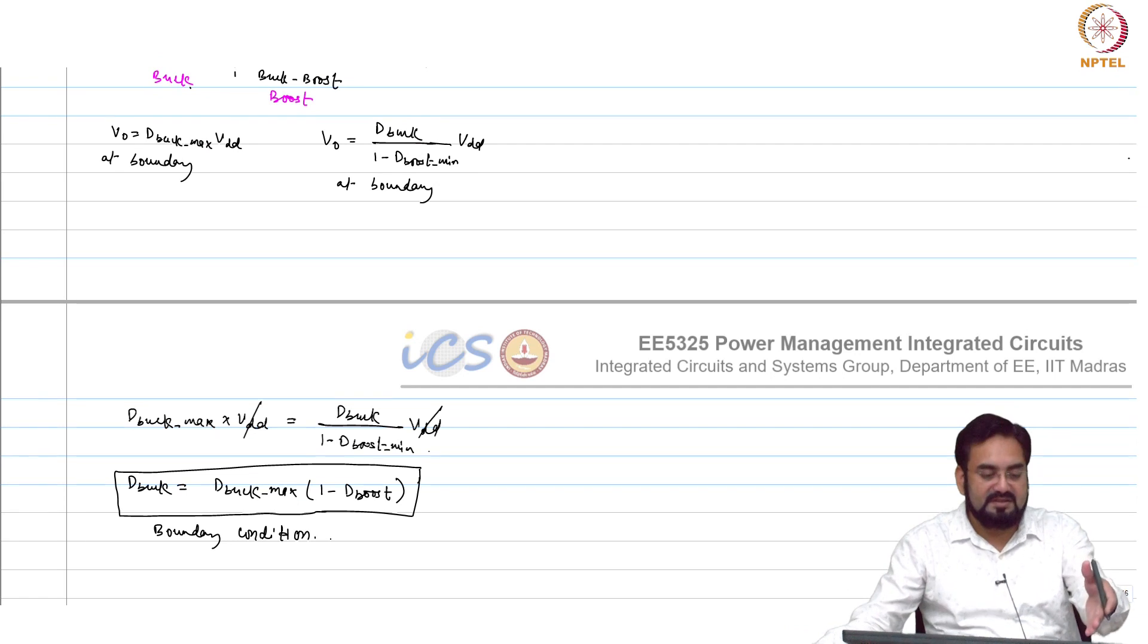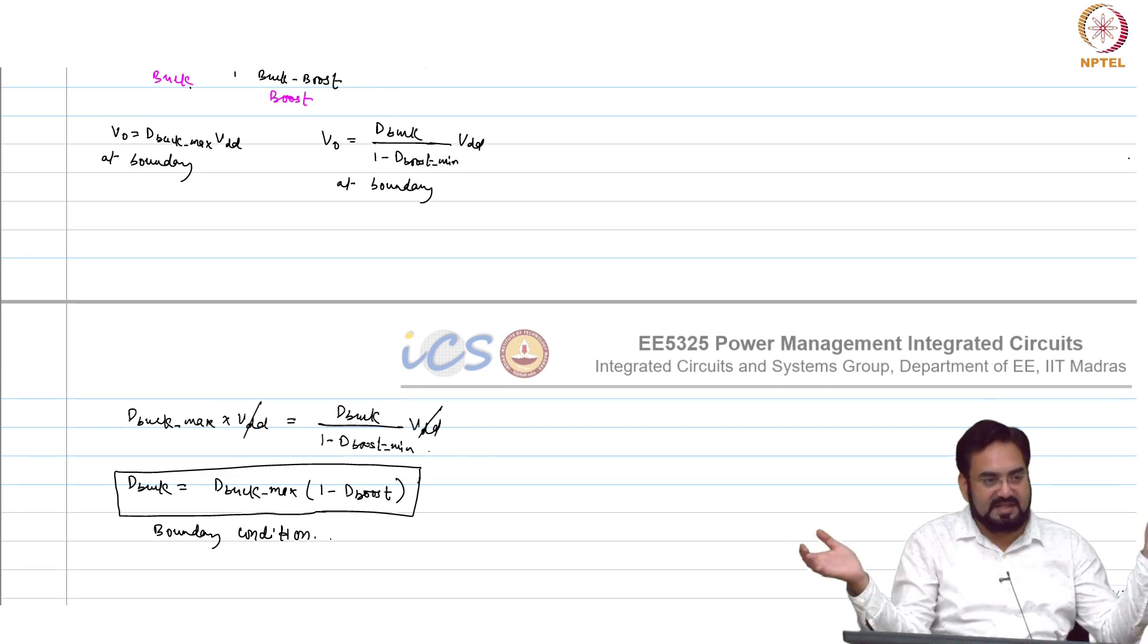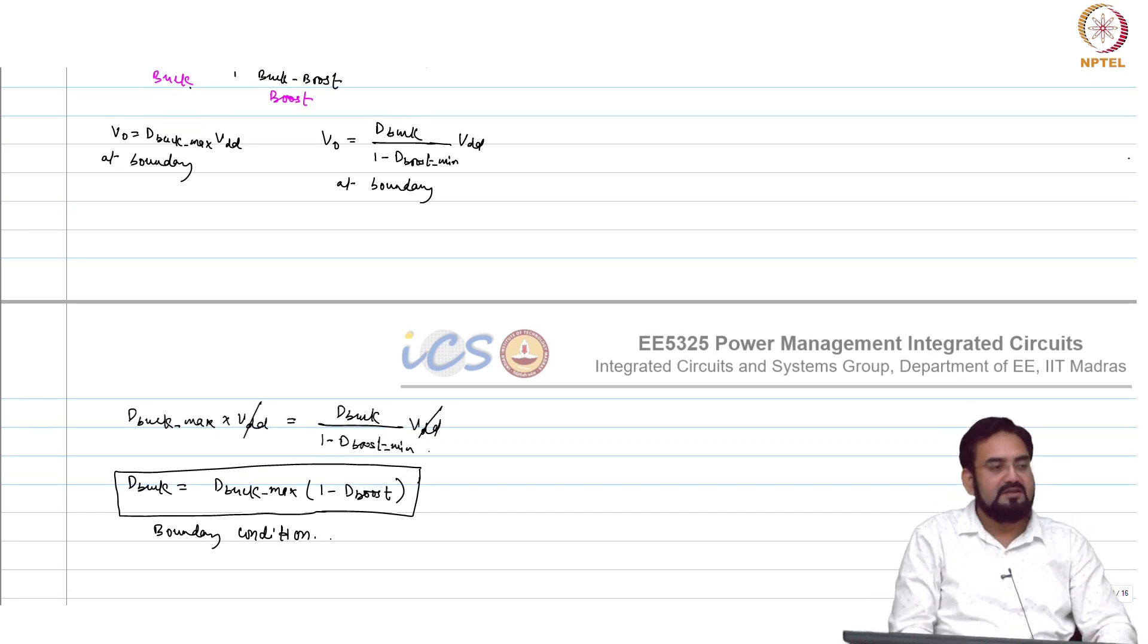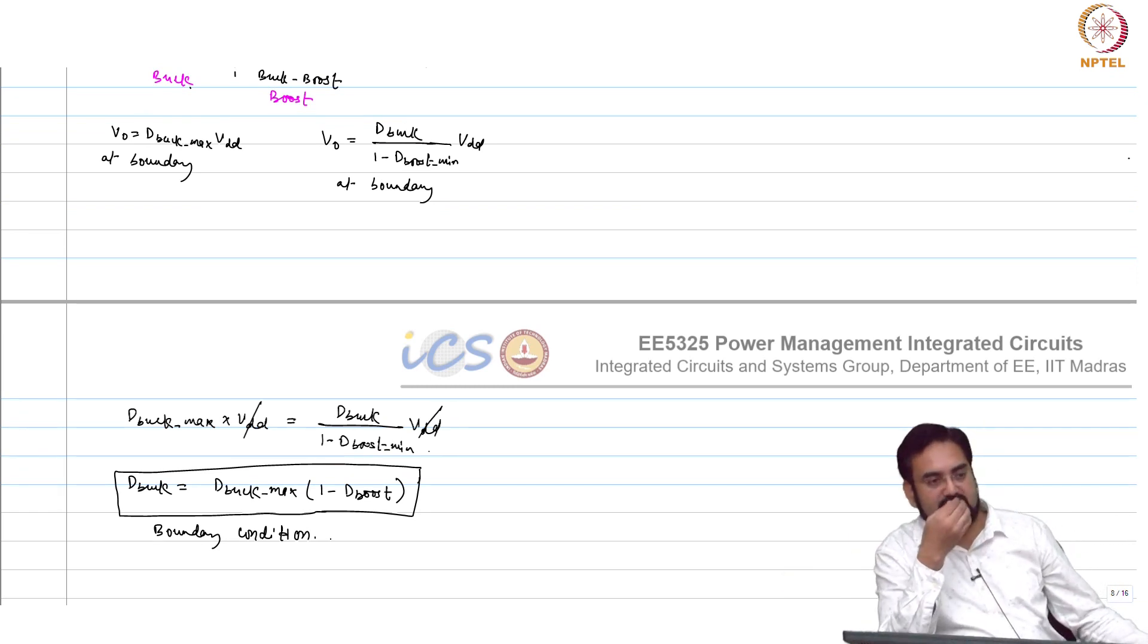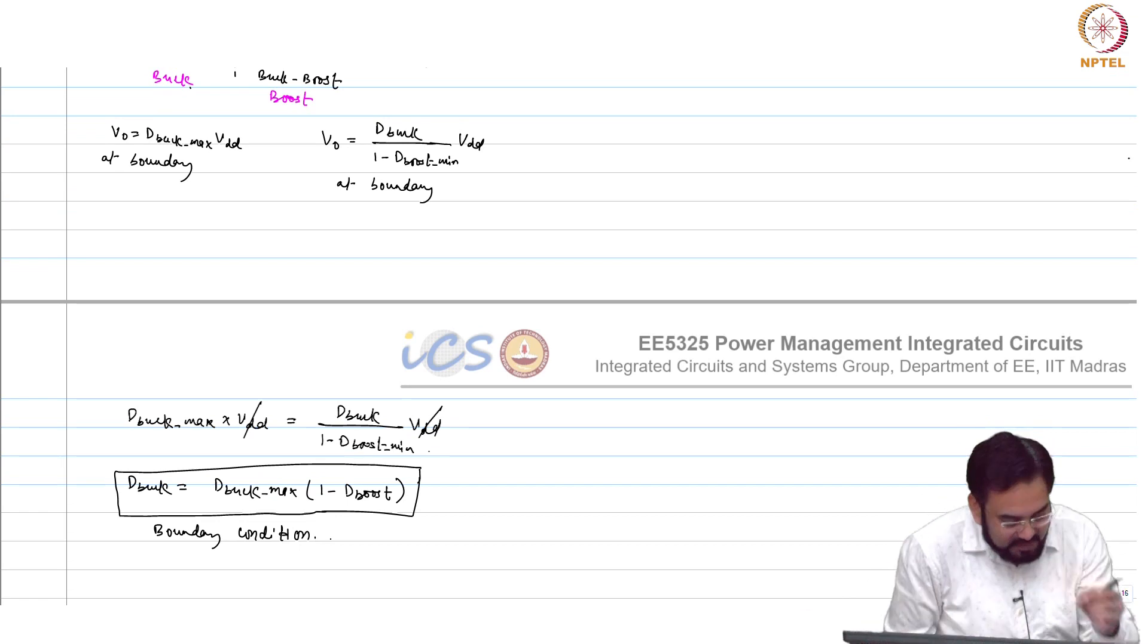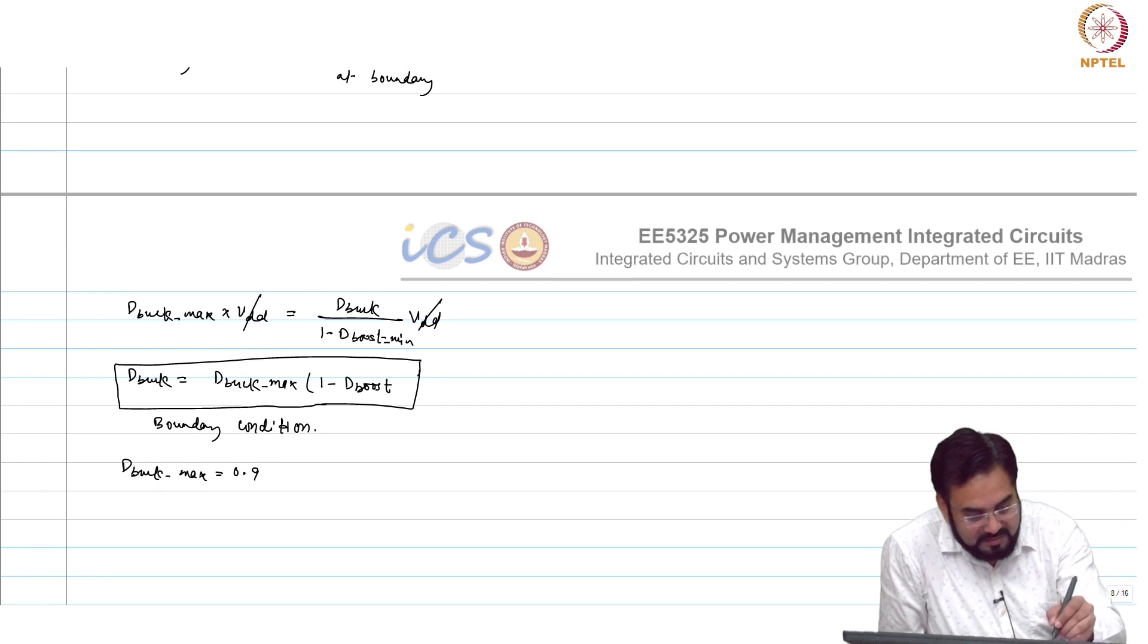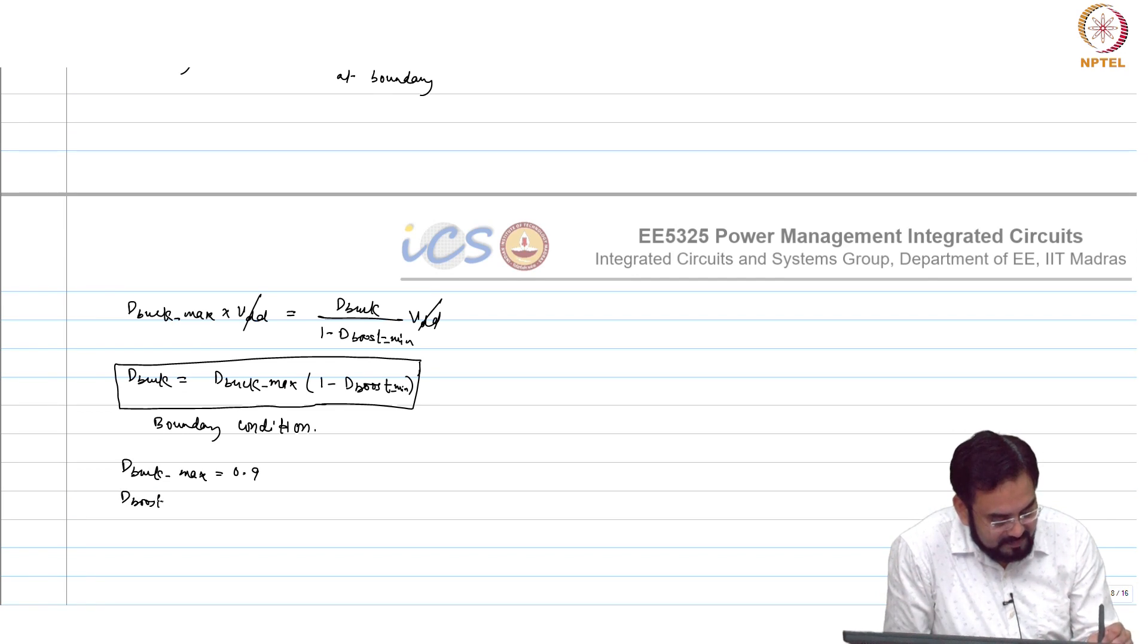Same thing you can do for buck boost to boost. The left hand side equation will change in that case basically left hand side you will be operating in buck boost and right hand side you will be operating in boost. In buck boost your equation will remain same debug over 1 minus d_boost. In what condition you will enter the boost? When will you enter the boost? Now let us do the same thing again.